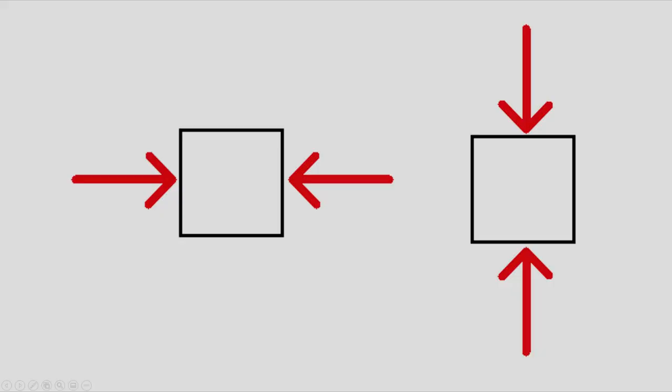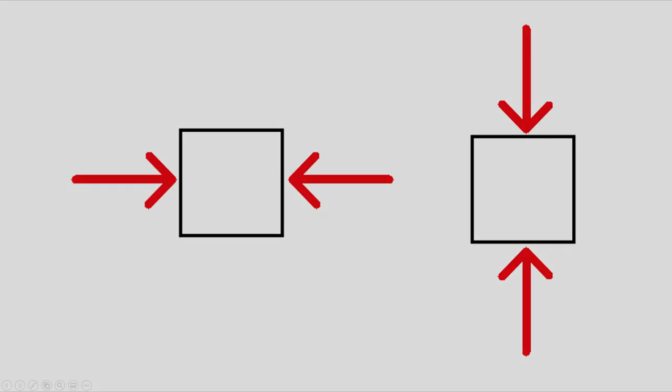Next, we can try to push on it — we can try to make it smaller in the direction of the applied force. We call this compression. Finally, we can distort the element by applying forces parallel to its faces, and we refer to this force as shear.